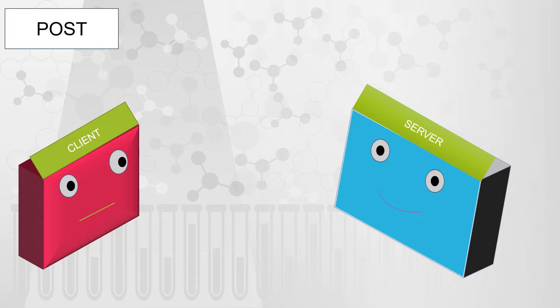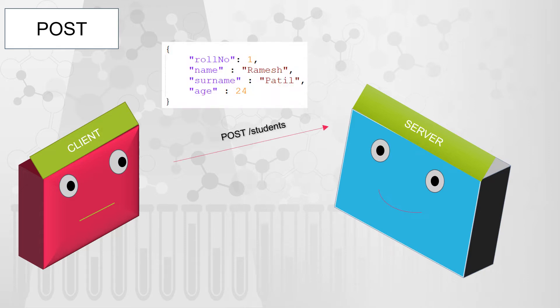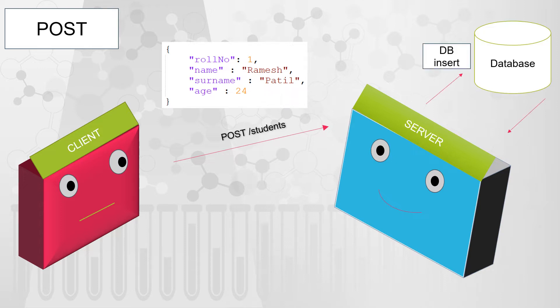Let's assume a scenario where the client wants to create a student record on the server side. To create this new resource, the POST method is used. The client will send the POST call to the server, and in the message body or payload it will send the details required to create that resource. The server will accept the request and do the processing.